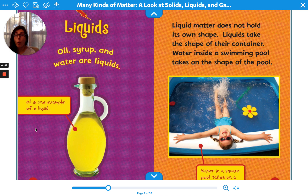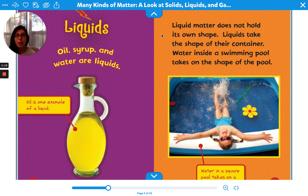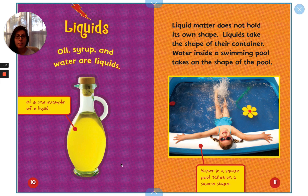Liquids. Oil, syrup and water are liquid. That's right — oil is one example of a liquid. Liquid matter does not hold its own shape. Liquids take the shape of their container. Water inside a swimming pool takes on the shape of the pool. Water in a square pool takes on a square shape.